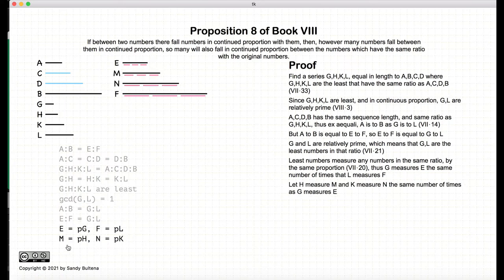Now, let's create two new numbers, m and n, such that m is equal to p times h. So we have e is equal to p times g. So we have e, m and f, and they are all equal multiples of g, h, k and l.